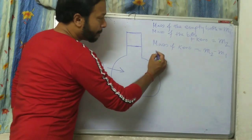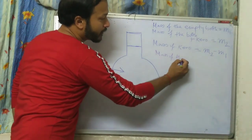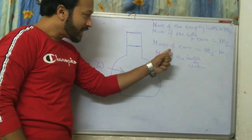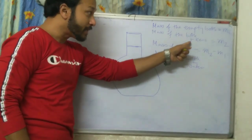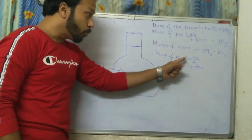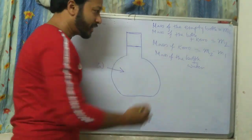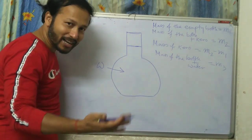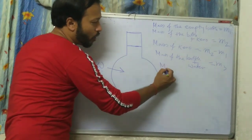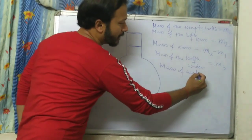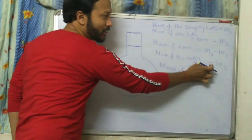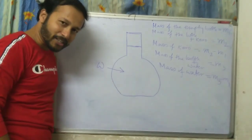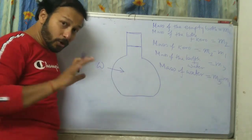Now the bottle is filled with water. Find the mass of the bottle plus water — call this M3. The mass of water only equals M3 minus M1.